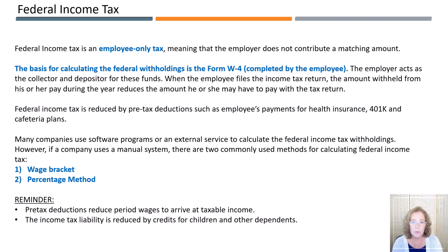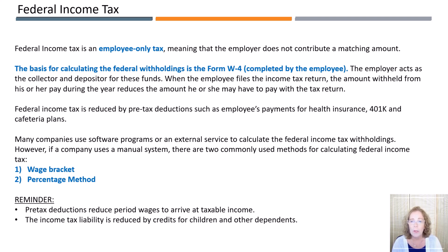Many companies use software programs or an external service to calculate the federal income tax withholdings. However, if a company uses a manual system, there are two commonly used methods for calculating federal income tax: the wage bracket and the percentage method. Just remember that pre-tax deductions reduce the gross pay to arrive at taxable income. That means that we take the gross pay and subtract any pre-tax deductions such as 401(k) and health insurance to arrive at the amount we will be using to calculate federal income tax.